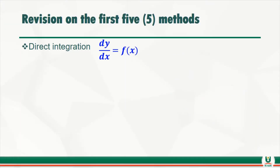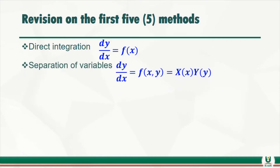Before we proceed, let's quickly revise the methods we have already learned. The first method is direct integration — it is very simple. We only have dy equals f of x. All you need to do is put dx beside f of x and then integrate. Just cross-multiply or multiply both sides by dx, then carry out the integration.